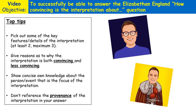Then you need to give reasons as to why the details or features you've picked out are both convincing and less convincing. It's really important that you reference both. If you just write about the interpretation being convincing or just less convincing, you won't get as many marks. You also need to show really concise own knowledge about the person or event the interpretation is about. Don't reference the provenance of the interpretation — just focus on the content and use your own knowledge to validate whether it is convincing or less convincing.